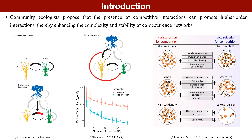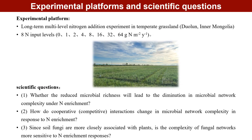Therefore, the above results contradict this theory. Furthermore, information on how microbial interactions and network complexity respond to nitrogen enrichment and its underlying mechanisms is still severely lacking. Based on this, we studied the changes in the microbial co-occurrence network in China's temperate grasslands with nitrogen input gradients.